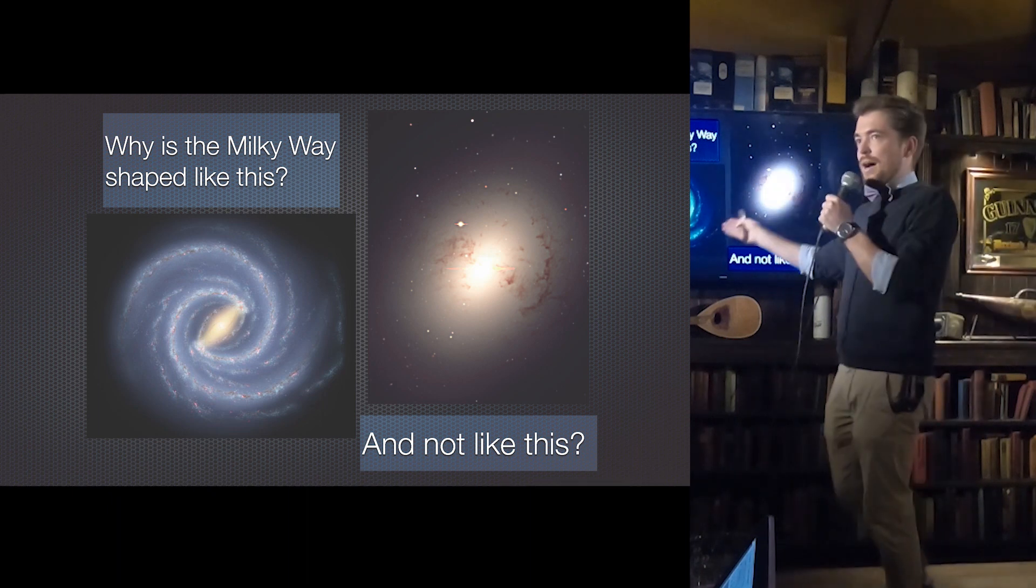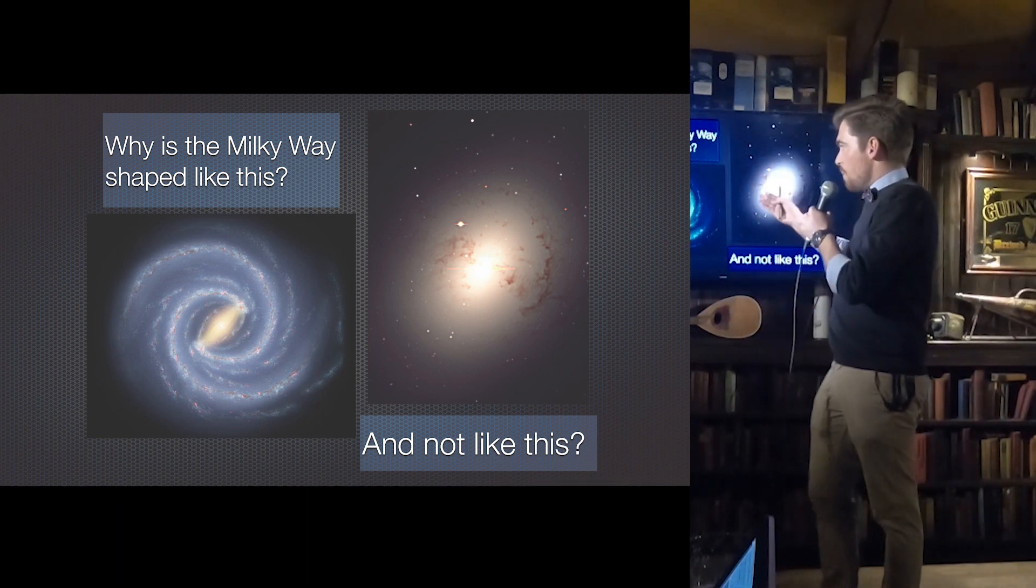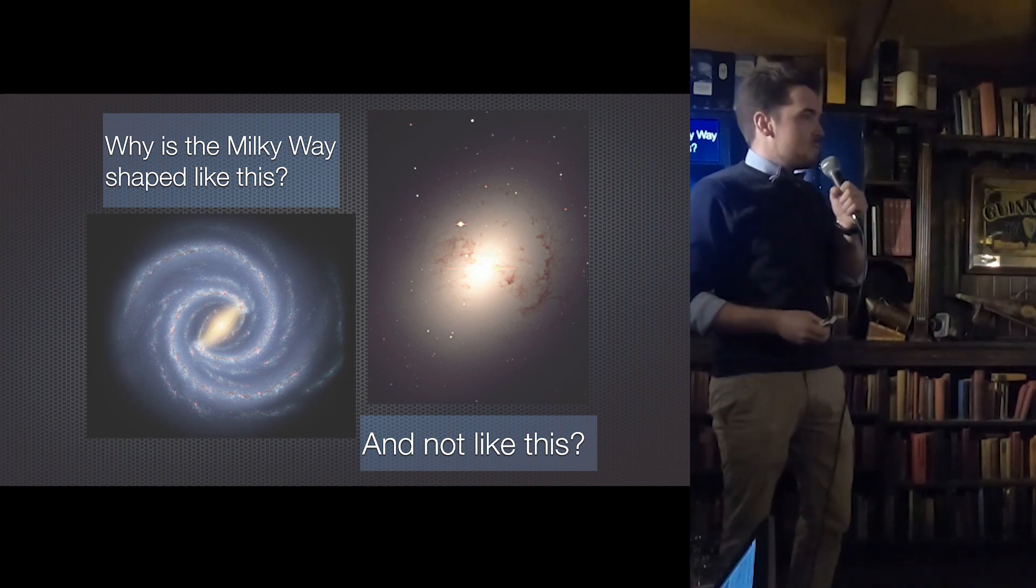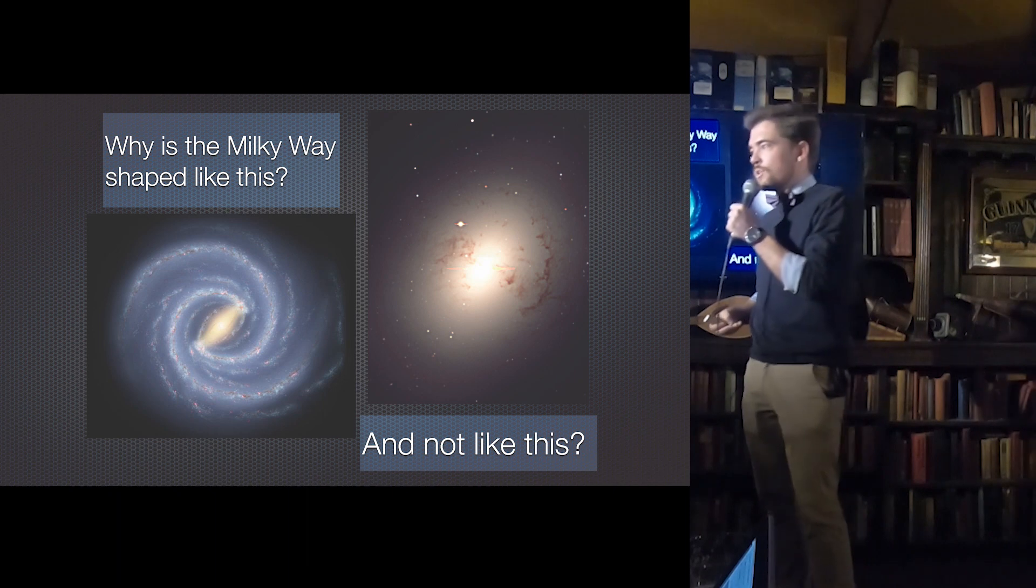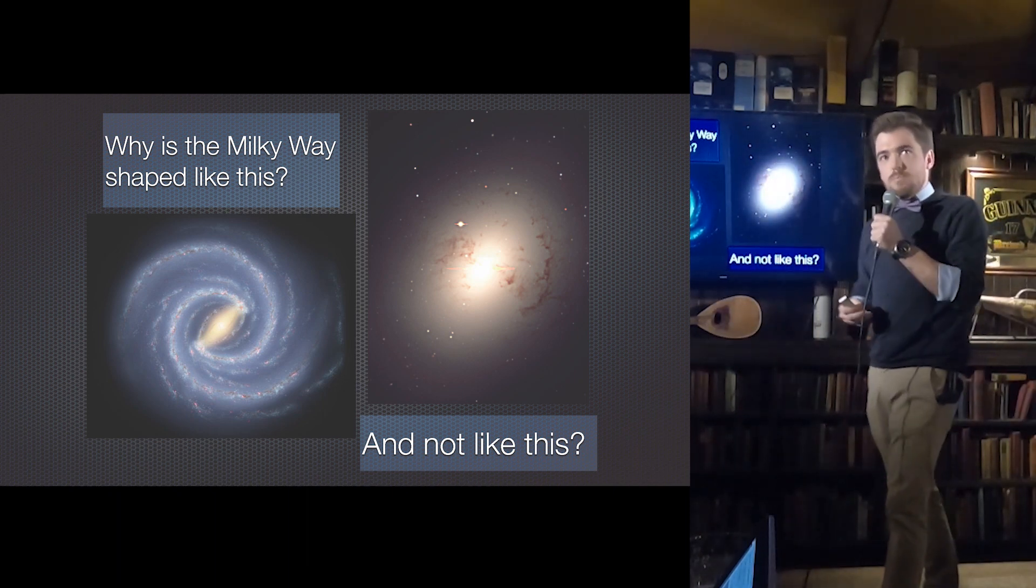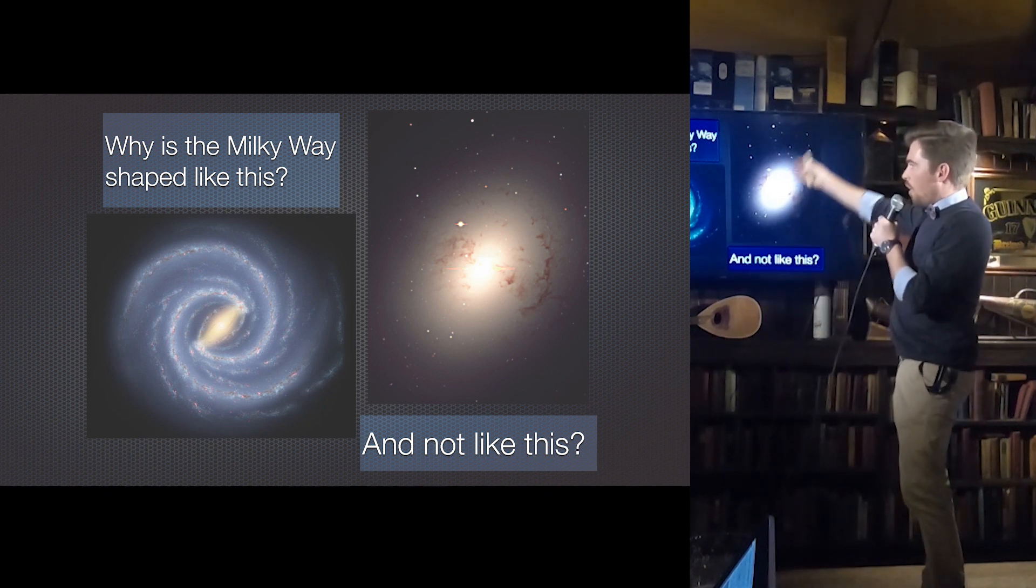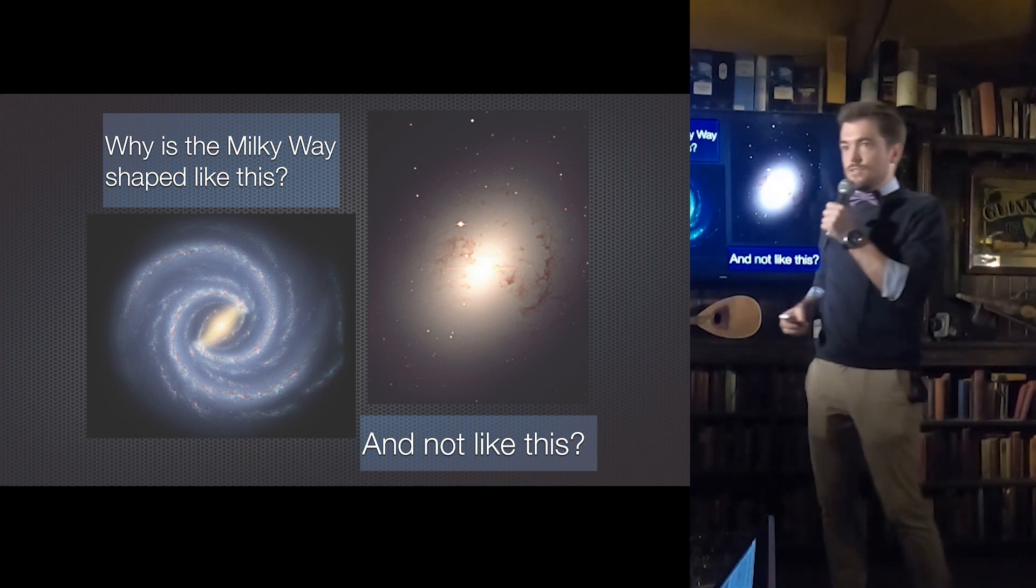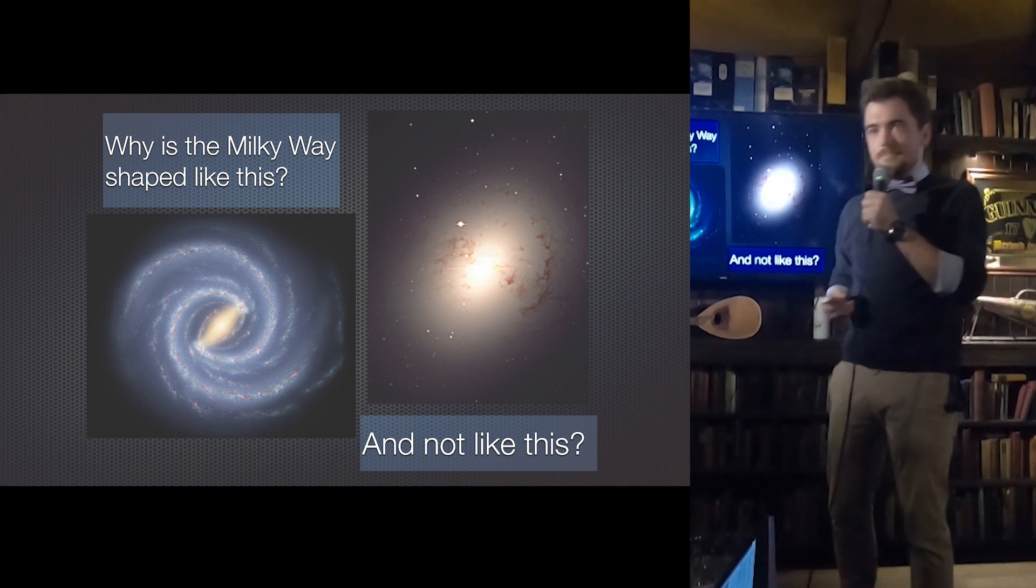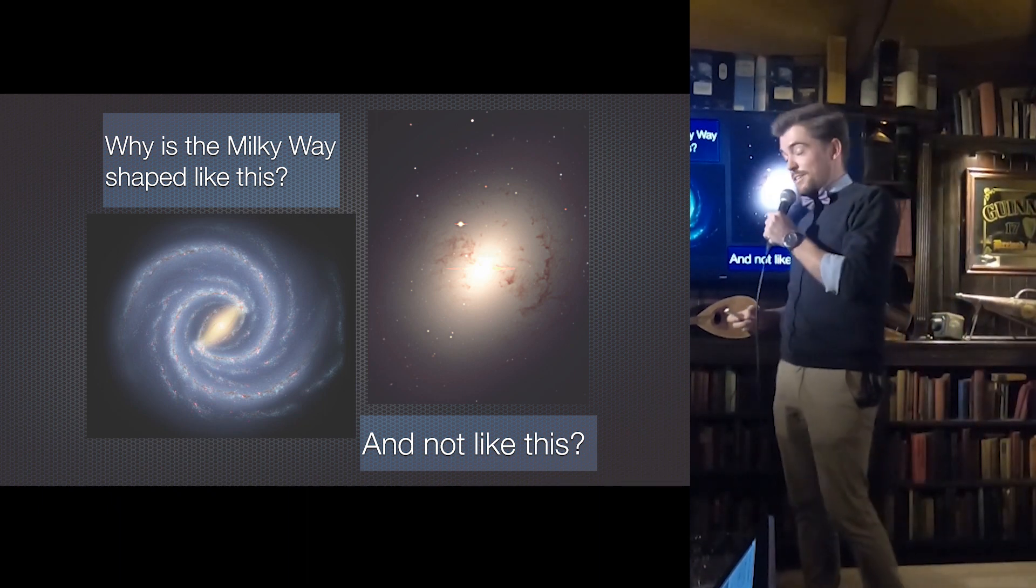So the question that we're going to be trying to answer tonight is this one. This is the Milky Way, as you're probably already well aware. The Milky Way looks like this. It looks like a spiral galaxy. And the question that I want to pose to everyone tonight is why. Why does the Milky Way look the way that it does?